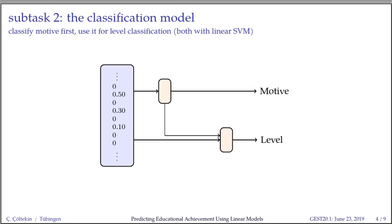The classifiers used for subtask 2, the OMT classification task, are SVM classifiers with a one-versus-rest multiclass strategy. A somewhat interesting aspect of this model is that it is hierarchical: we first predict the motif, then use the distances from the decision boundaries of the motif classifier as additional features for the level classifier. My initial reason for trying the OMT classification task was to use the classifier predictions as additional features for the regression model, but it did not work as well as I expected. So the final results do not include any knowledge transfer between the subtasks. The subtask 2 model also included a domain adaptation trick, but the benefit of the domain adaptation, if any, was negligible.